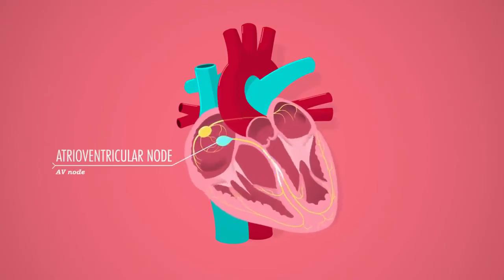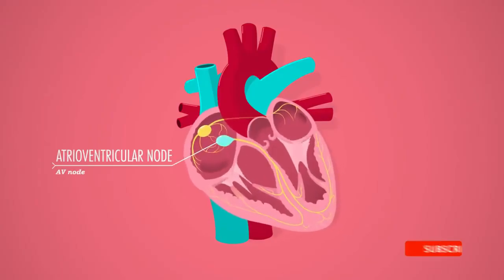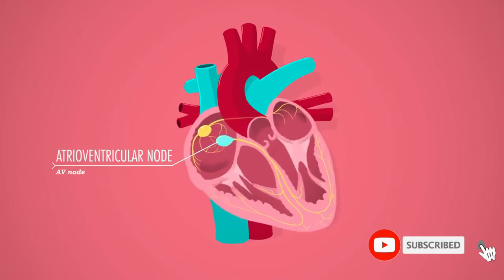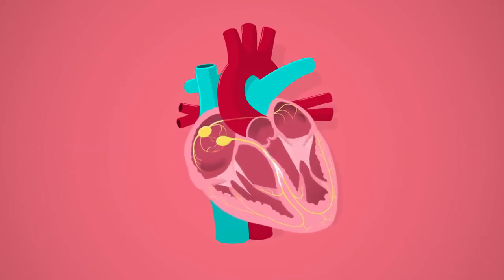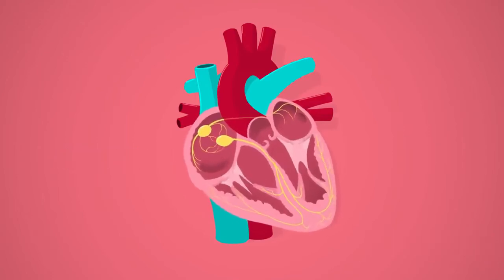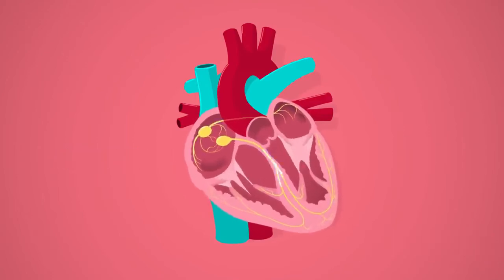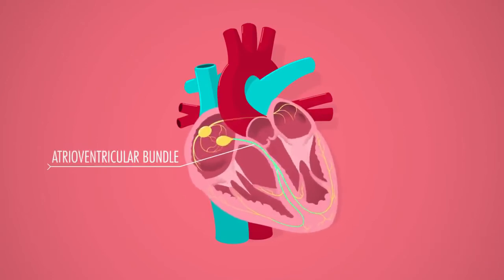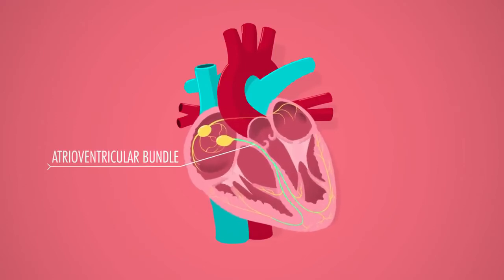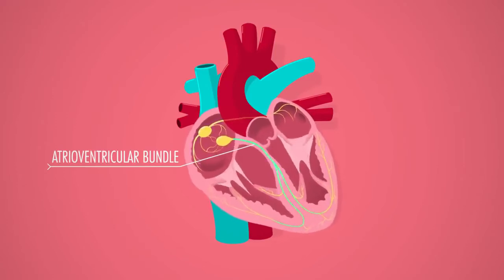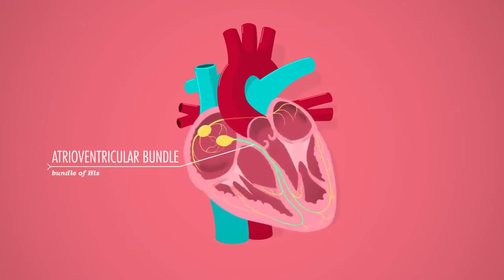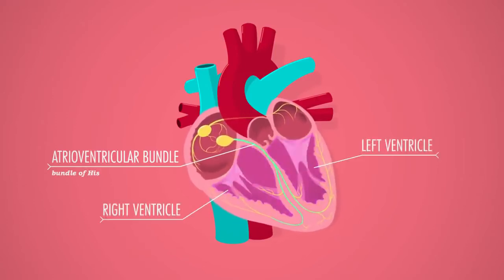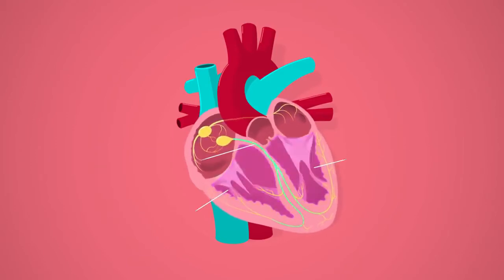So from the AV node, the signal travels straight down to the inferior end of the heart and gets distributed to both sides. The path the electrical impulse takes to the bottom of the heart is called the atrioventricular bundle, also known by the more rad name the bundle of His, where it branches out to the left and right ventricles.